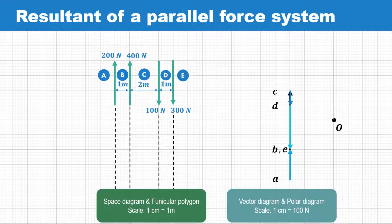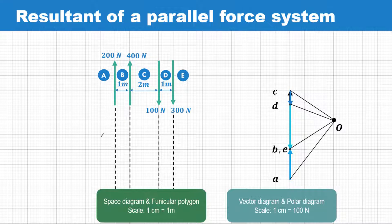We now locate any point O, which is known as the pole, to draw the polar diagram. We join O with points C, D, E, A, and B.